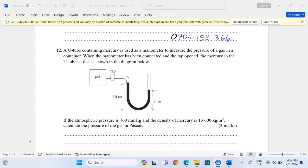A U-tube containing mercury is used as a manometer to measure the pressure of a gas in a container. When the manometer has been connected and the tap opened,